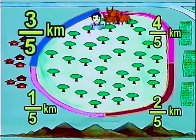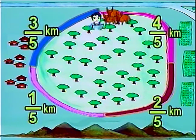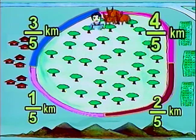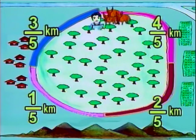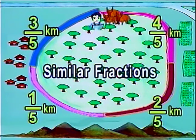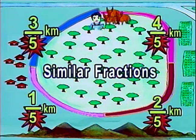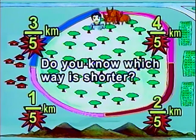3 fifths, 1 fifths, 4 fifths, and 2 fifths are called similar fractions because they have the same denominator. Do you know which way is shorter?